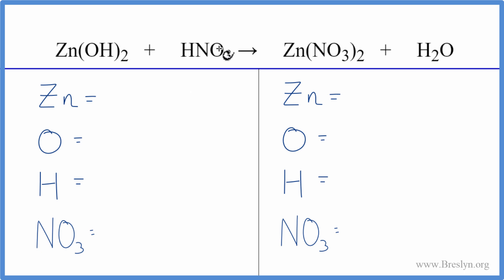This nitrate group, this NO₃, that's a polyatomic ion that stays together. We have it here and then right here. So I'm just going to count it as one item, and that'll make the balancing a lot more manageable.